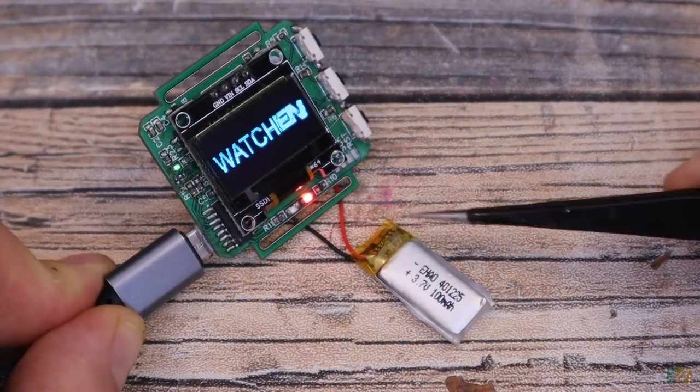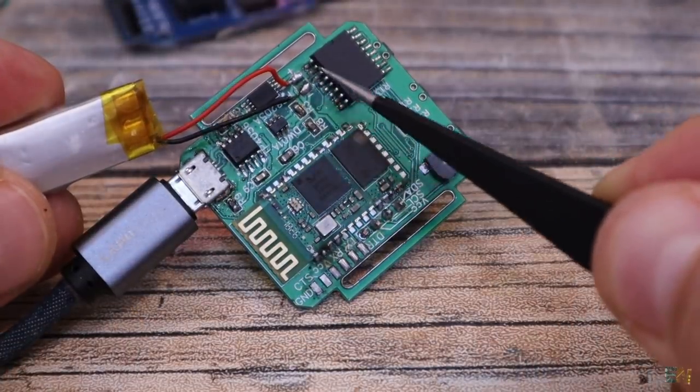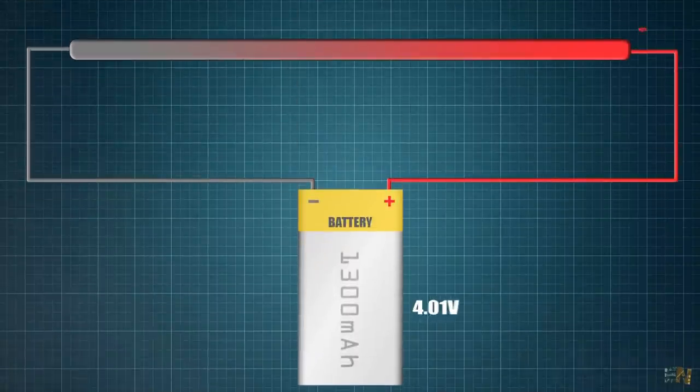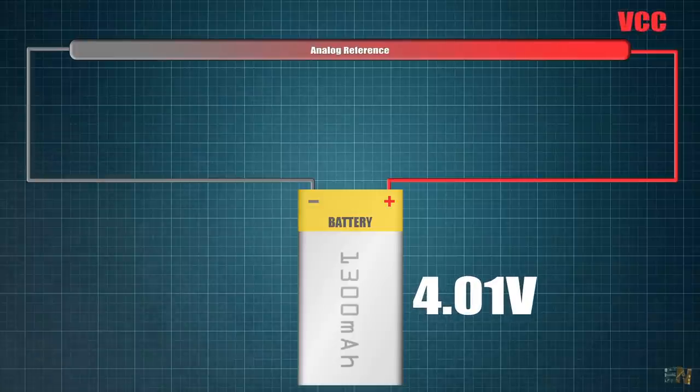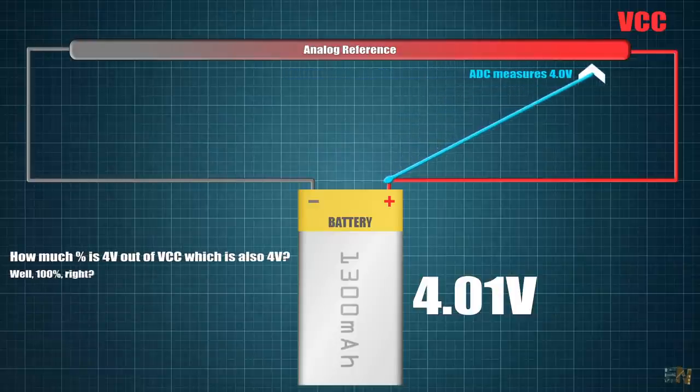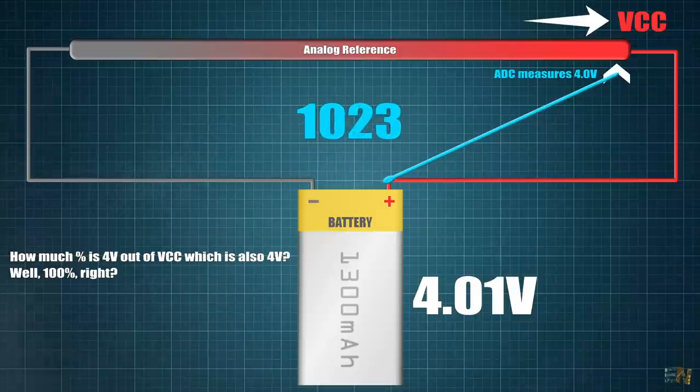But this is the problem. I want to measure the battery voltage. But the analog reference is the battery itself because the battery is the supply of my Arduino. So let's say that the battery is charged to 4V for example. So I make the ADC conversion and the chip will compare the measured 4V with the analog reference which if it's defined to be by default the VCC value, it will be 4V as well. So the ADC would give us the maximum value which is 1023.